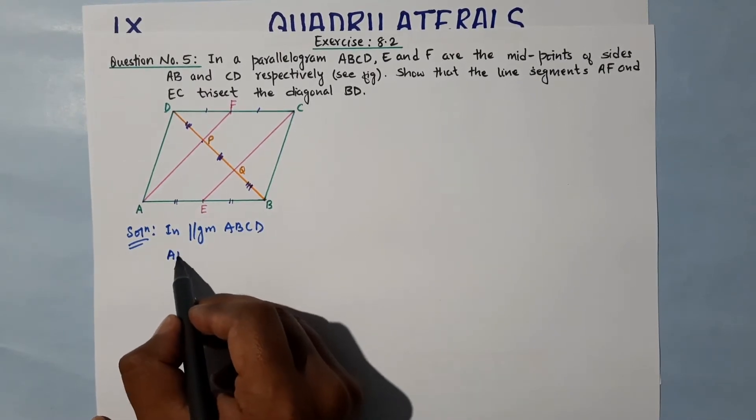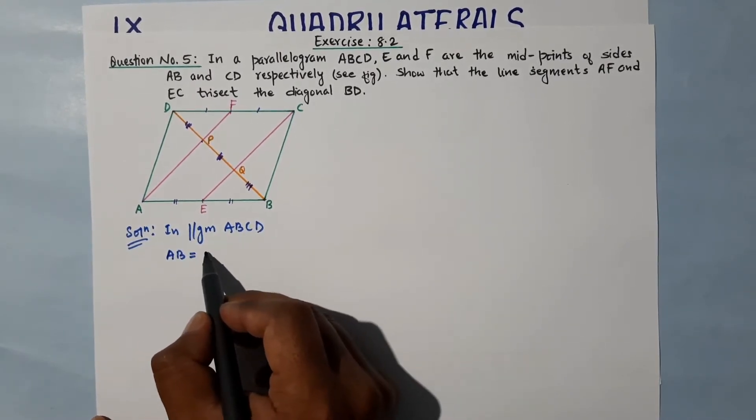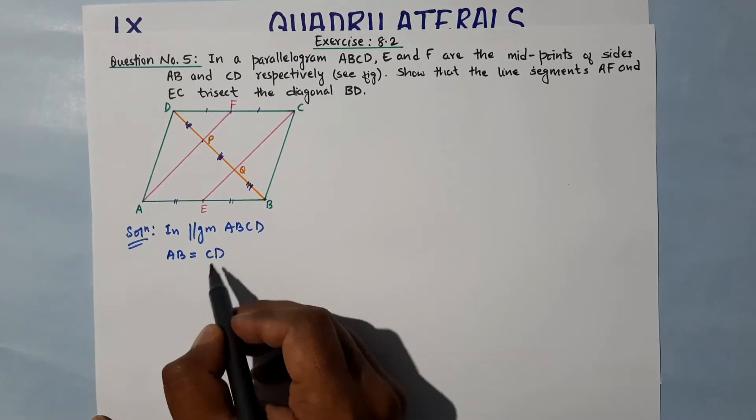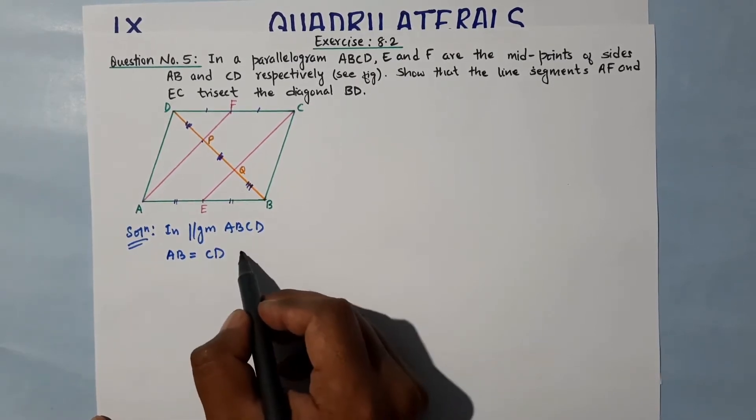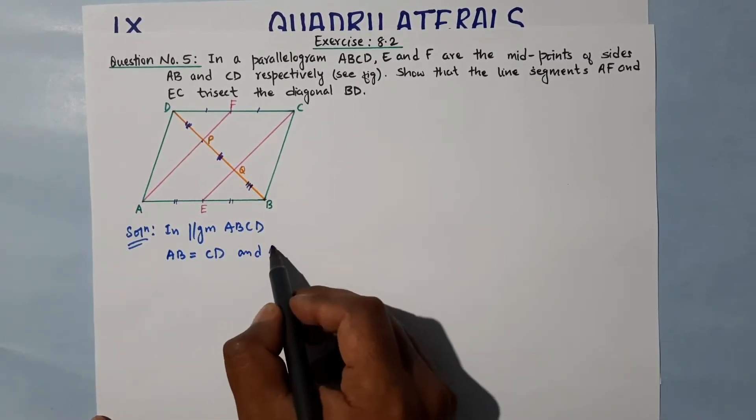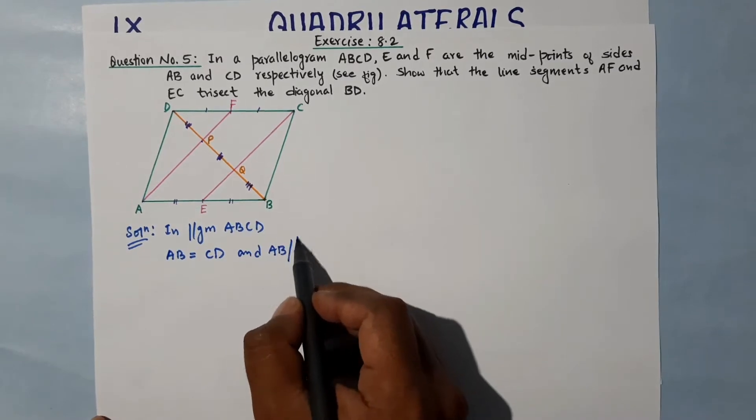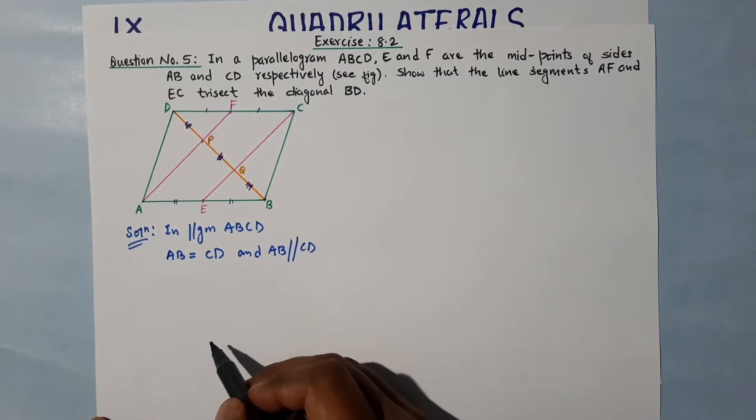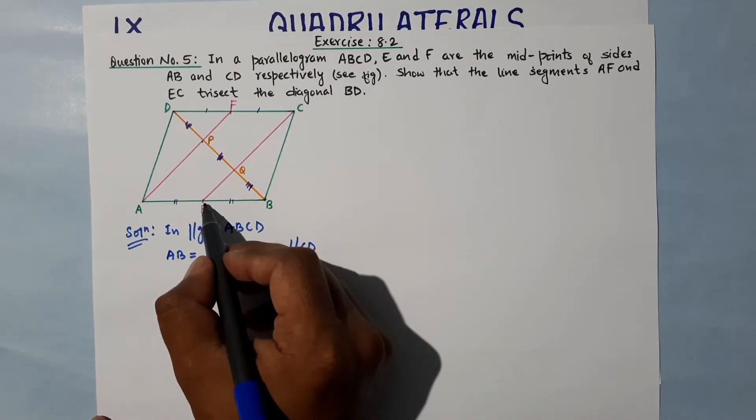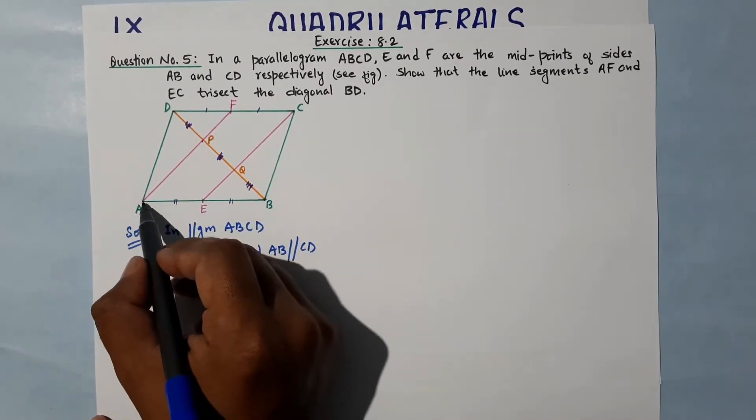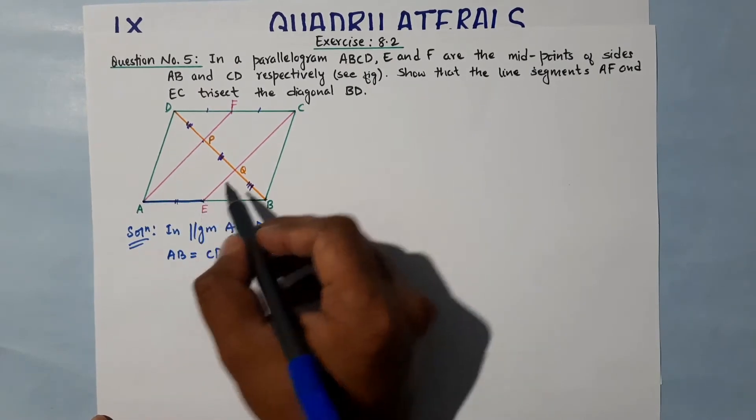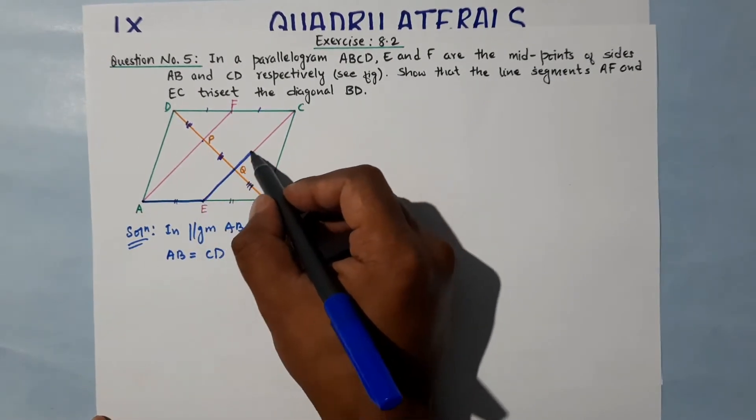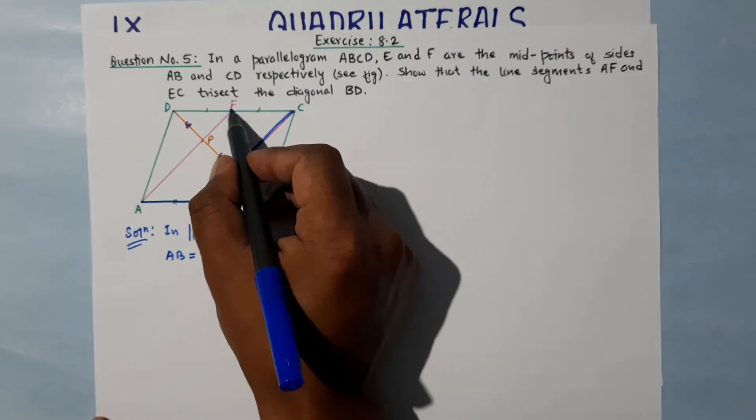...AB is equal to CD, and AB is parallel to CD. In a parallelogram, opposite sides are equal and parallel. Now E is the midpoint, so we can write AE is equal to...